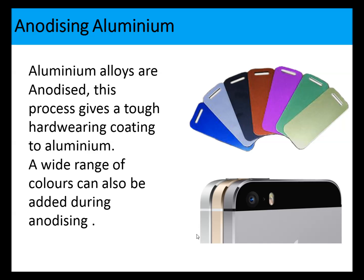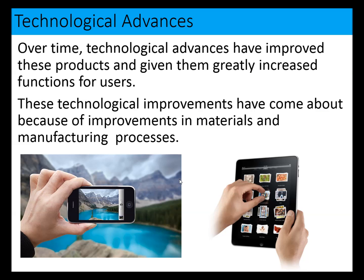Aluminium alloys are anodized in a process called anodizing. This gives the aluminium phone case a tough, hard-wearing coating and also allows a wide range of colors to be applied during anodizing - so it provides both a hard-wearing coating and adds color to aluminium.